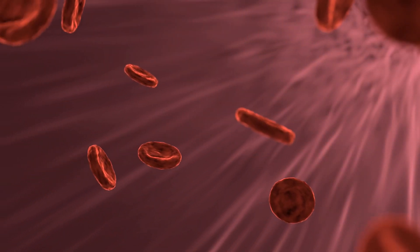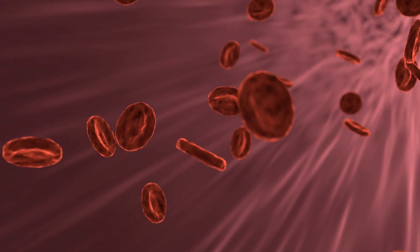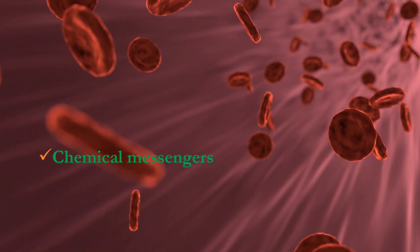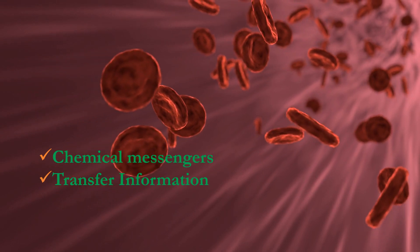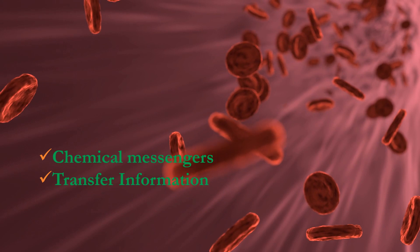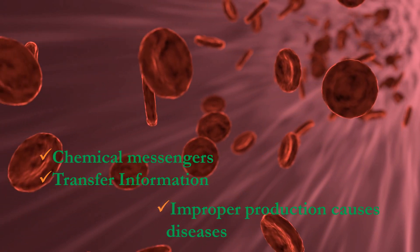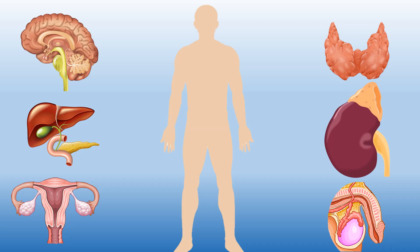Now let's look at hormones — what are hormones and what is their role in our body? Hormones are chemical messengers created by the body. They transfer information from one set of cells to another to coordinate the function of different parts of the body. Hormones are very necessary for our body; if they are produced in lesser or greater amounts, it causes certain diseases.